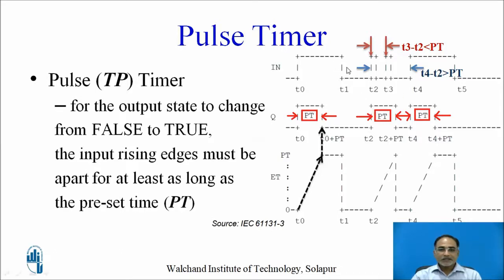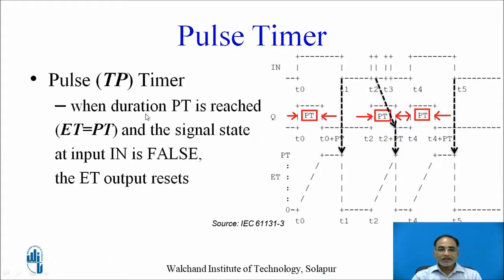When the input changes from 1 to 0, ET resets to 0. At time instants T1 and T5 you will see that ET resets to 0. When the duration PT is reached — that is, ET becomes equal to PT — and the signal state at the input is false, the ET output also resets. So at T1, at T2 plus PT, and at T5, ET resets to 0.